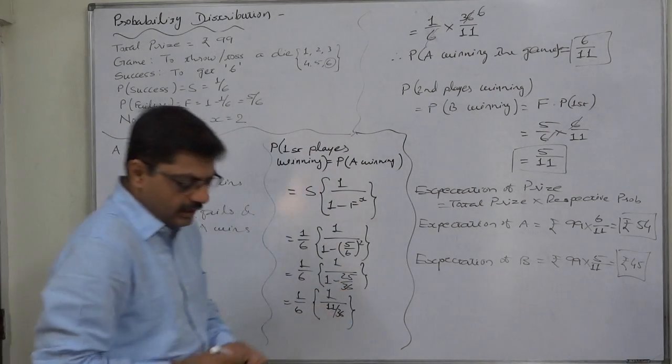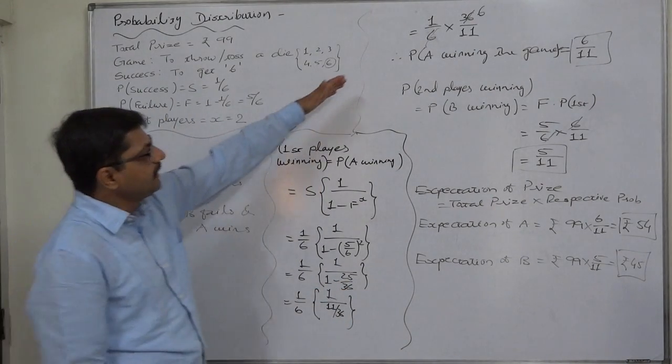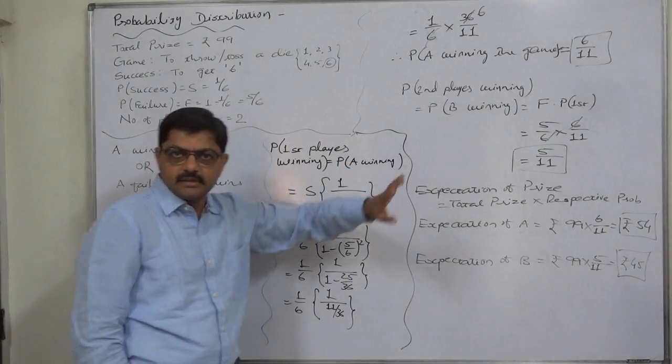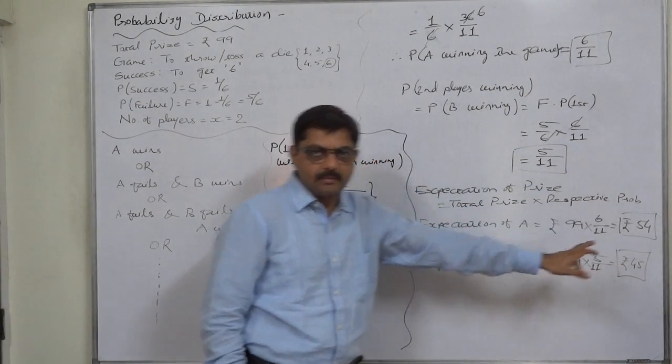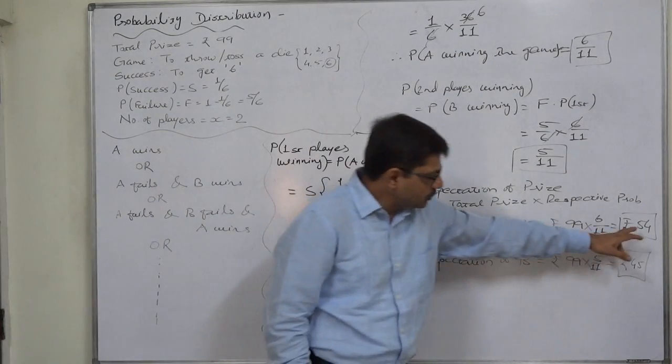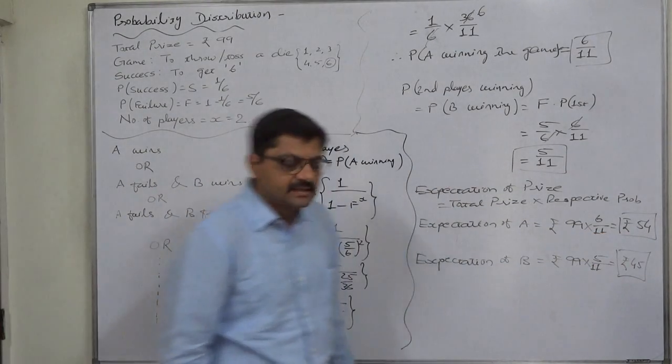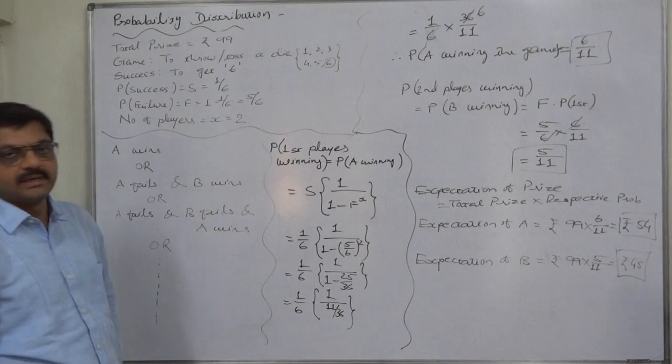Since there are only two players, either A will win the game or B will win the game. These two are mutually exclusive and exhaustive cases. So the summation of their probabilities will be 1. Similarly, the summation of their expectation will be exactly equivalent to total price money.